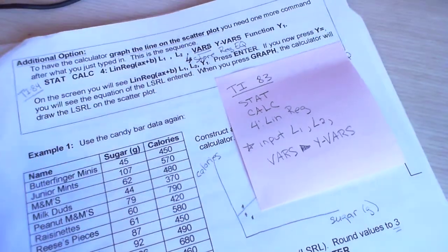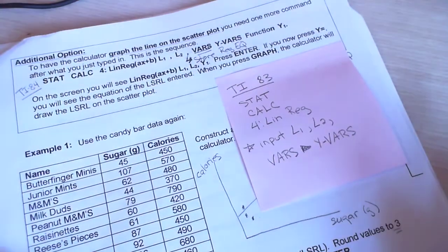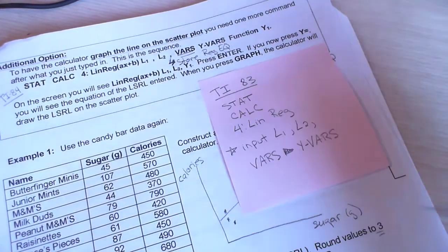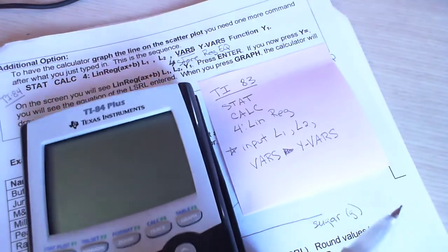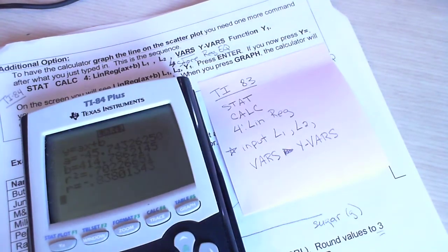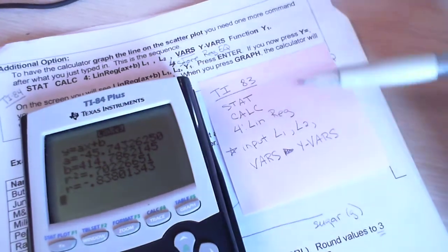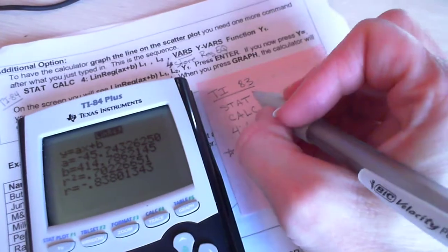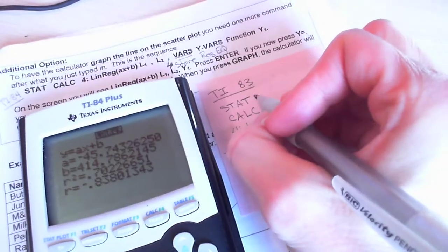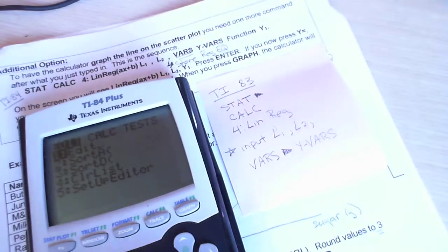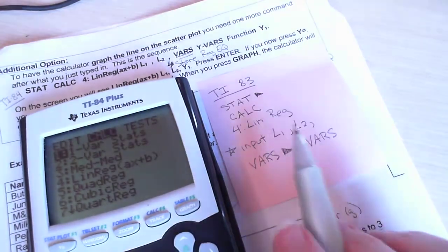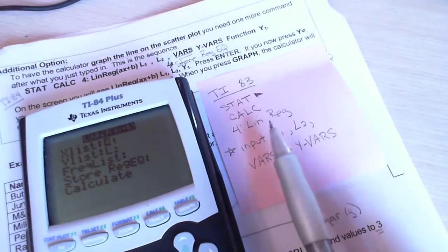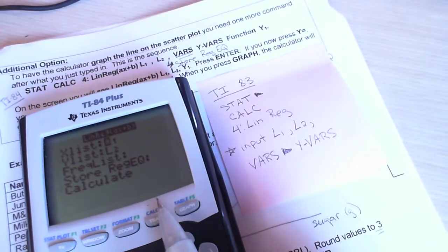Those instructions you might have already figured out will not work for a TI-83. So I wanted to go through what you're going to do with a TI-83. Unfortunately, I don't have a TI-83, but I can give you an idea. So we're going to start the same way with the STAT, over to calc, and then the 4, the linear regression.